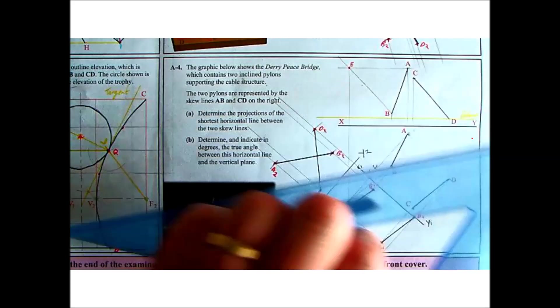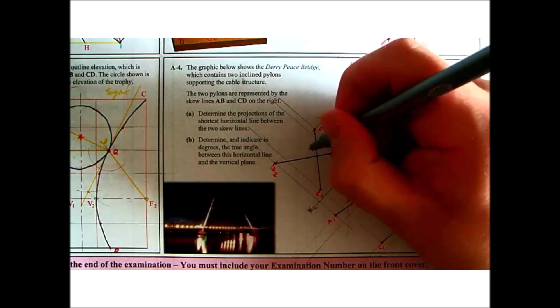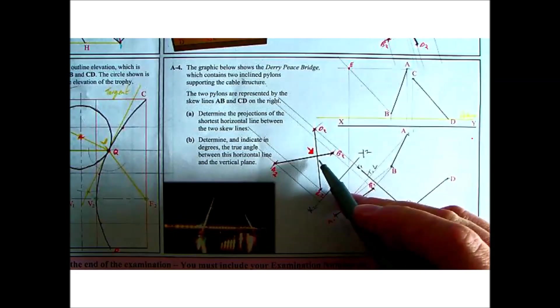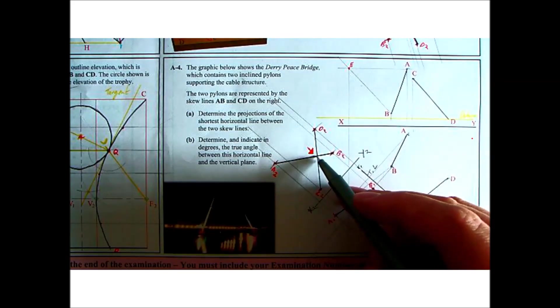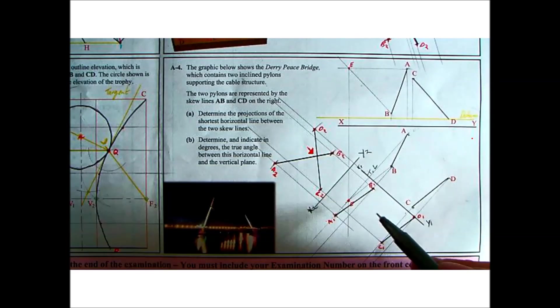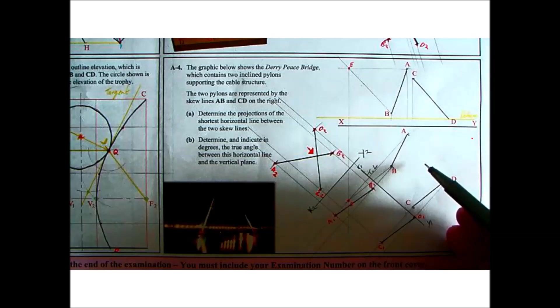And where they cross in here is your shortest horizontal distance. And that point represents a line. So if we bring that point projected back now from one view to the other using the correct angles, you will see the shortest horizontal distance in the first auxiliary view, in the plan and then in the elevation.